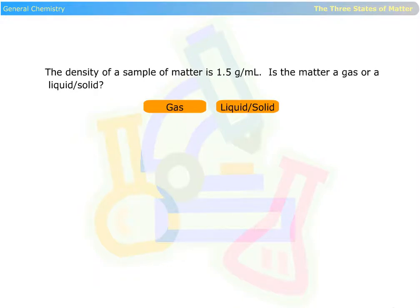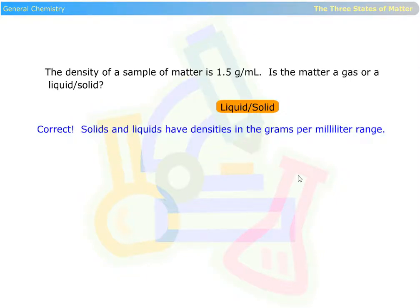The density of a sample of matter is 1.5 grams per milliliter. Is the matter a gas, or is it a liquid or solid? It is a liquid or a solid. Solids and liquids have densities in the grams per milliliter range.